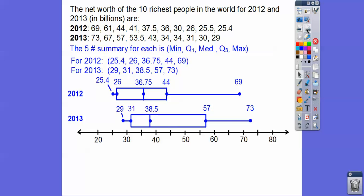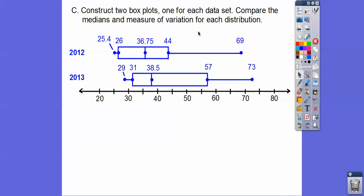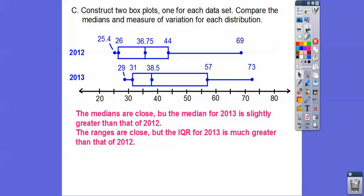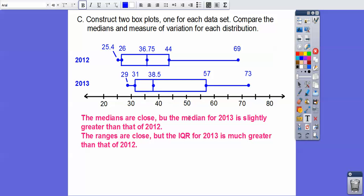The directions say construct two box plots, one for each data, and then compare the medians and the measure of the variance for each one. Well, the medians, in 2012, the median was less than 2013. But they're close. The median for 2013 is slightly greater than that of 2012. And then the ranges are close. The range numbers are how much do they range by. So how much is 69 minus 25.4? Well, it's pretty close to 79 minus 29.